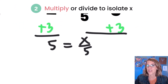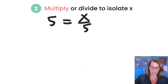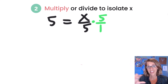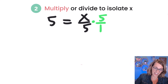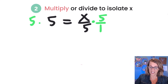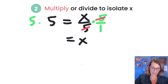Our second step is to multiply or divide. But this time I've got x divided by 5, so I'm going to multiply to undo that division by 5. I'm going to multiply by 5, which you could think of as 5 over 1 to keep everything lined up. I better do that on the other side as well, so times 5 on the other side too. On the side where my x is, I can cancel those 5s — 5 divided by 5 is equal to 1 — and I get just x on the right-hand side. On the left-hand side, I've got 5 times 5, which is equal to 25.